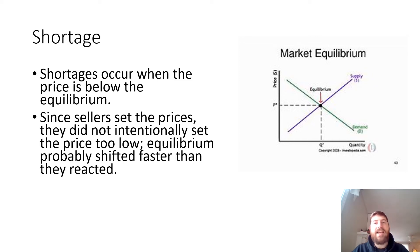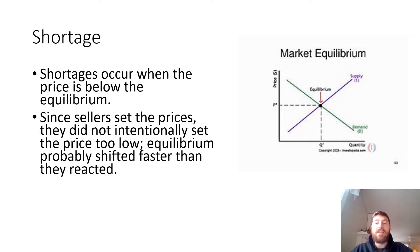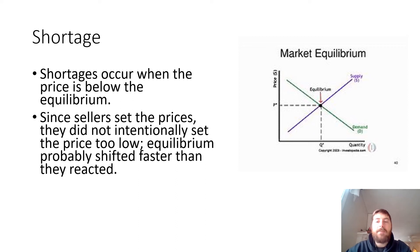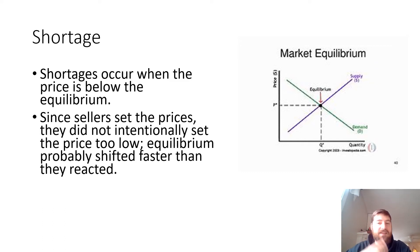Shortages occur when the price is below the equilibrium — low enough that producers don't feel like producing. Who would intentionally set prices too low? Usually something happened to shift the equilibrium up or reduce supply. That's why prices need to change constantly. If you are the producer, you need to keep your eye on things and raise prices when a shortage is about to occur. This usually happens when the equilibrium shifts faster than producers react, and sometimes big companies are very slow to react. Governments are notoriously even slower, which is one problem with the government meddling in the economy.